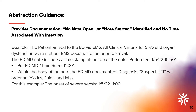In this example, all clinical indicators for SIRS and organ dysfunction were met per EMS documentation prior to arrival. The EDMD note time stamp at the top reads performed 1/5/22 at 10:50. Per the EDMD, the time seen was 11 o'clock. Within the body of the note, the EDMD documented a diagnosis of suspect UTI with orders for antibiotics, fluids, and labs — with no time attached to the diagnosis. Note that the performed time is not synonymous with note open or start time. Using the hierarchy, we would assign the time seen at 11 o'clock as the infection time for the UTI documentation.